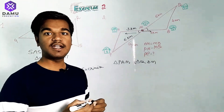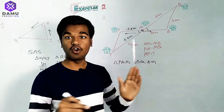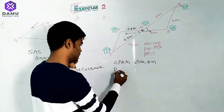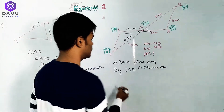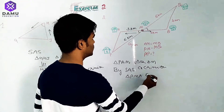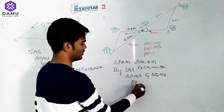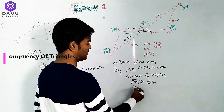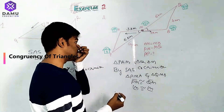We can observe that angle M and angle M are vertically opposite angles, so they are equal. By the SAS congruency criterion, in triangle PMA and triangle QMB: PM is congruent to QM, angle M is congruent to angle M, and MA is congruent to MB.